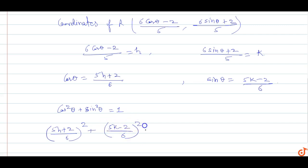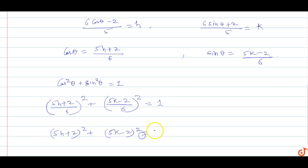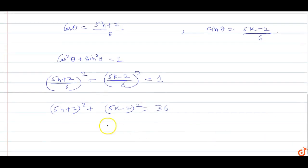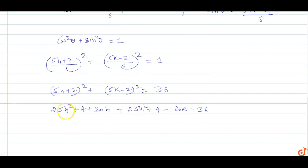Multiplying both sides by 36: (5h + 2)² + (5k − 2)² = 36. Expanding: 25h² + 20h + 4 + 25k² − 20k + 4 = 36. So 25h² + 25k² + 20h − 20k + 8 = 36.